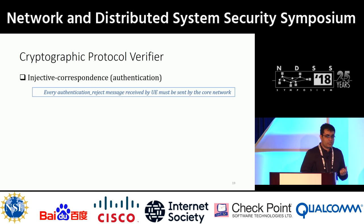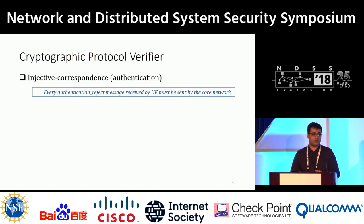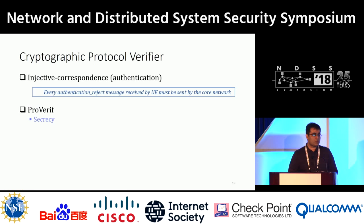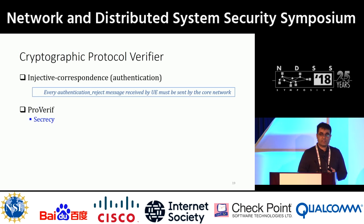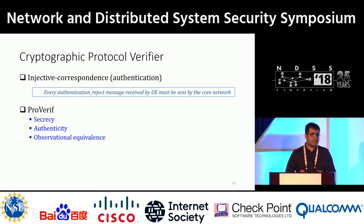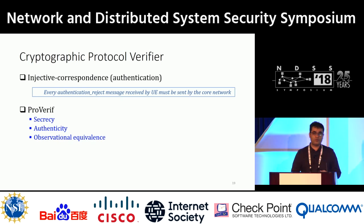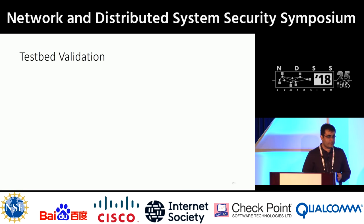We then take these attack steps into the cryptographic protocol verifier, where we post injective correspondence queries: every authentication reject message received by the UE must have been sent by the core network. We use ProVerif for the cryptographic protocol verifier, which is also capable of verifying secrecy, authenticity, and observational equivalence. Observational equivalence is used for linkability or traceability attacks, which enable coarse-grained location tracking.